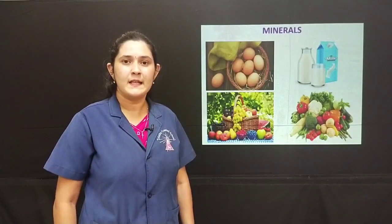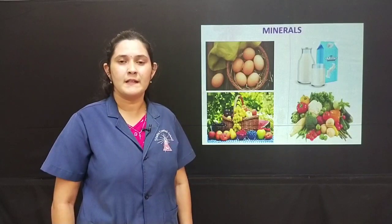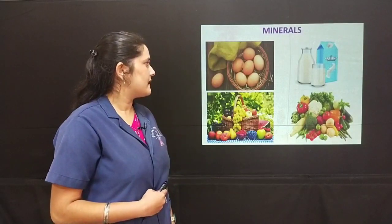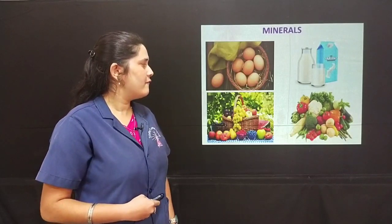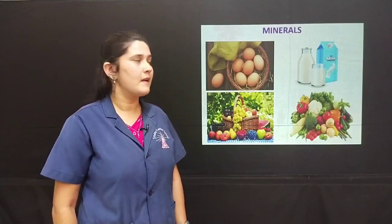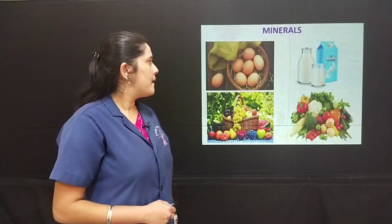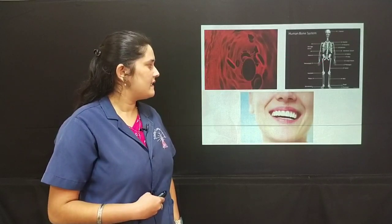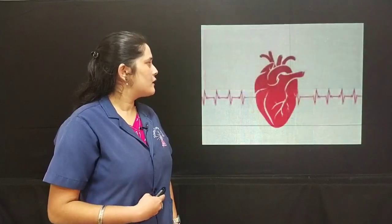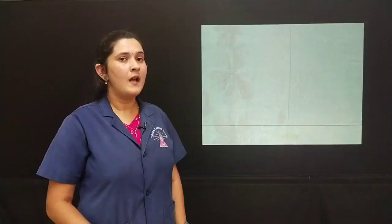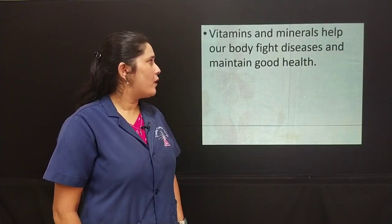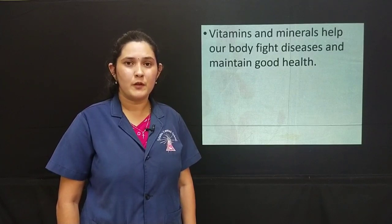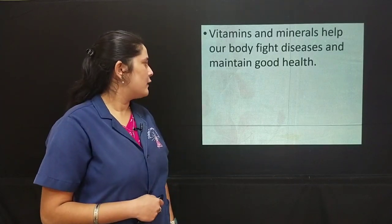The next nutrient we study is minerals. Minerals are also required in minute quantities, just like vitamins. Here are the sources of minerals — egg, milk, fruits and vegetables. How do minerals help us? Minerals help in the formation of blood, in the development of bones, and in maintaining the normal heart rate. Vitamins and minerals help our body fight diseases and maintain good health. Hence, they are known as protective food.